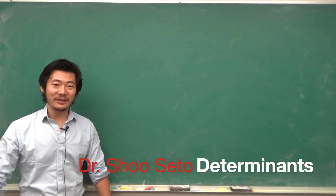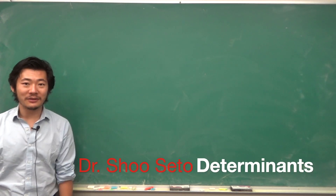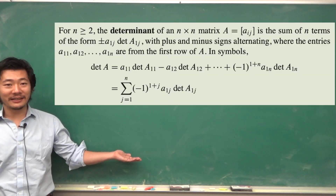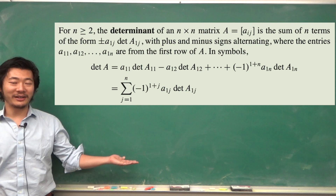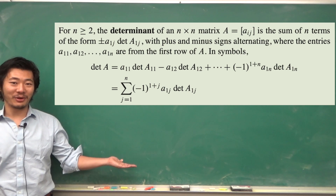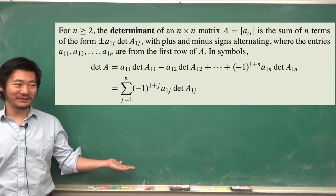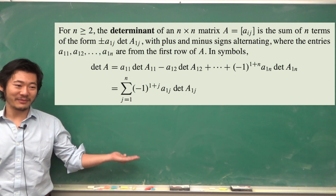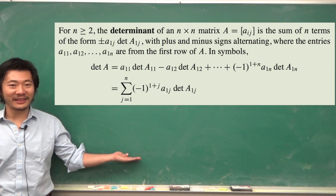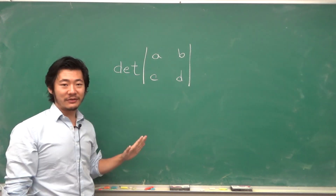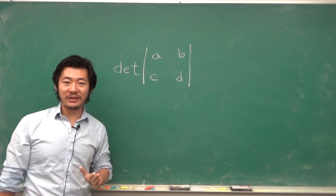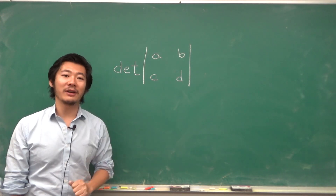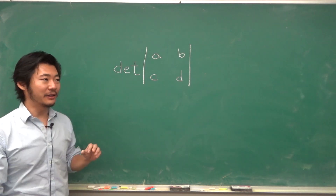In this video, we will talk about determinants. The definition might not be the most approachable, so let's unravel it piece by piece — it's not that bad. First of all, determinants are about square matrices, so n by n matrices.